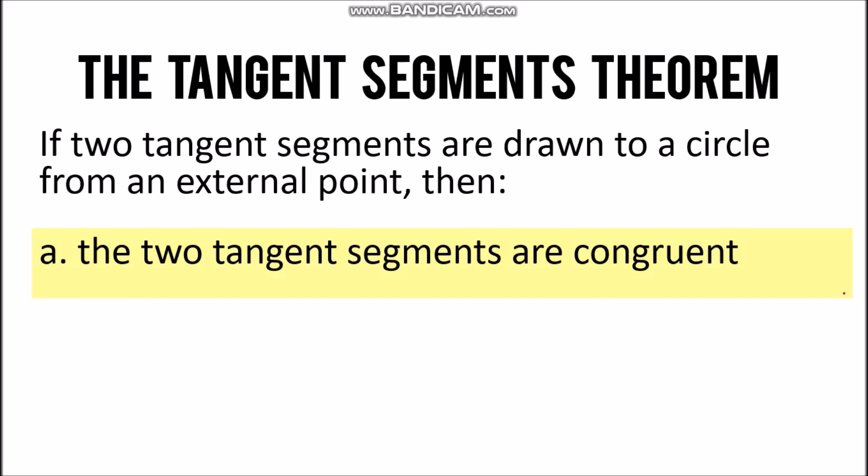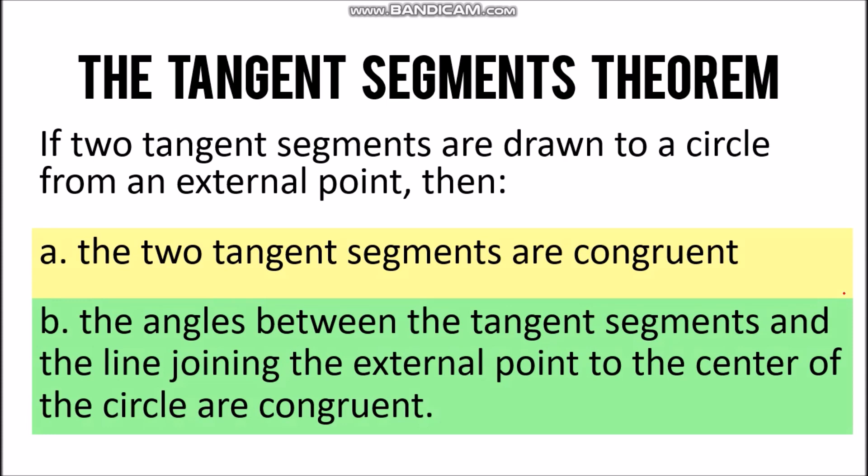First, the two tangent segments are said to be congruent. Second, the angles between the tangent segments and the line joining the external point to the center of the circle are congruent.